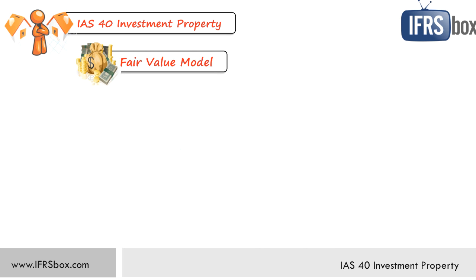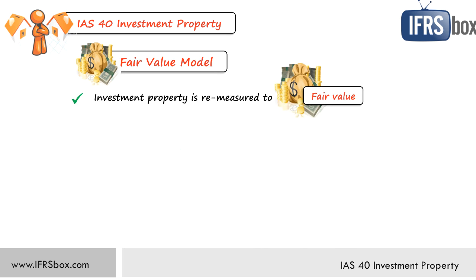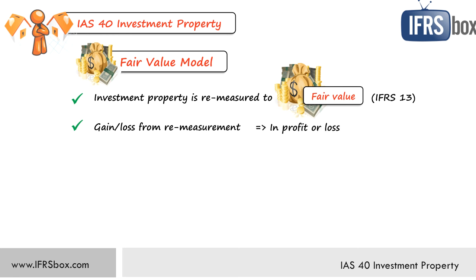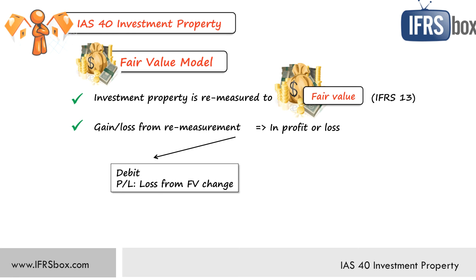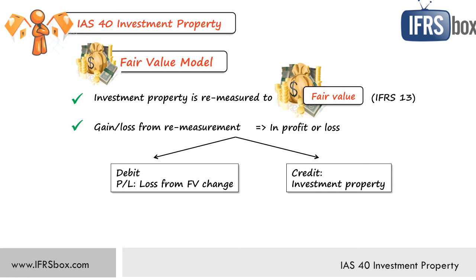Under the fair value model, the investment property should be measured at fair value, which means you should revalue it at least at the end of each reporting period. The rules for fair value measurement are stipulated in IFRS 13 Fair Value Measurement — you can find a dedicated video on IFRS 13 in this channel. Gain or loss from re-measurement is recognized in profit or loss; the journal entry is to debit profit or loss for a loss from fair value measurement and credit investment property — or the opposite entry if there's a gain. Under the fair value model, you do not charge any depreciation, and that's the main difference from the revaluation model.